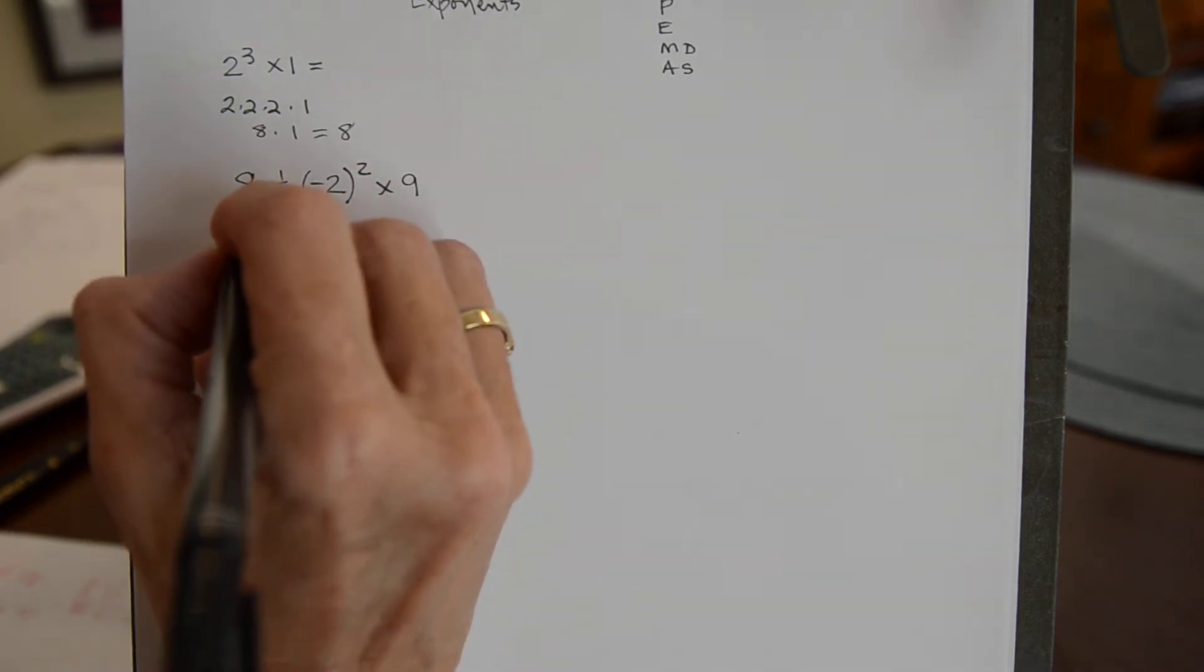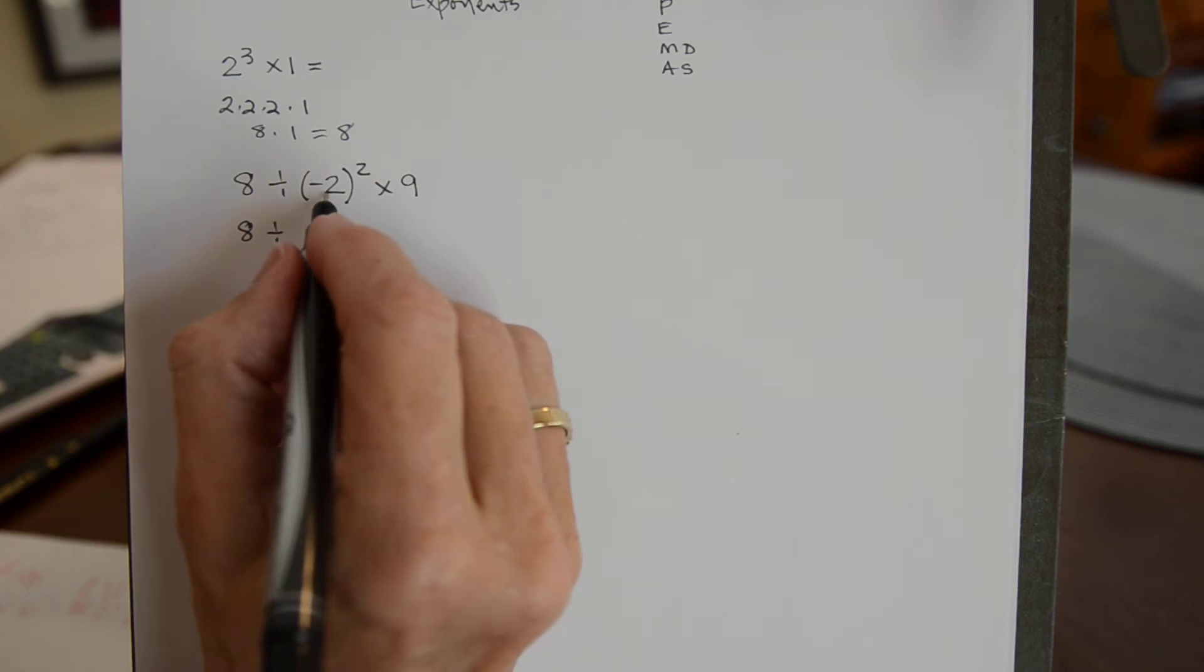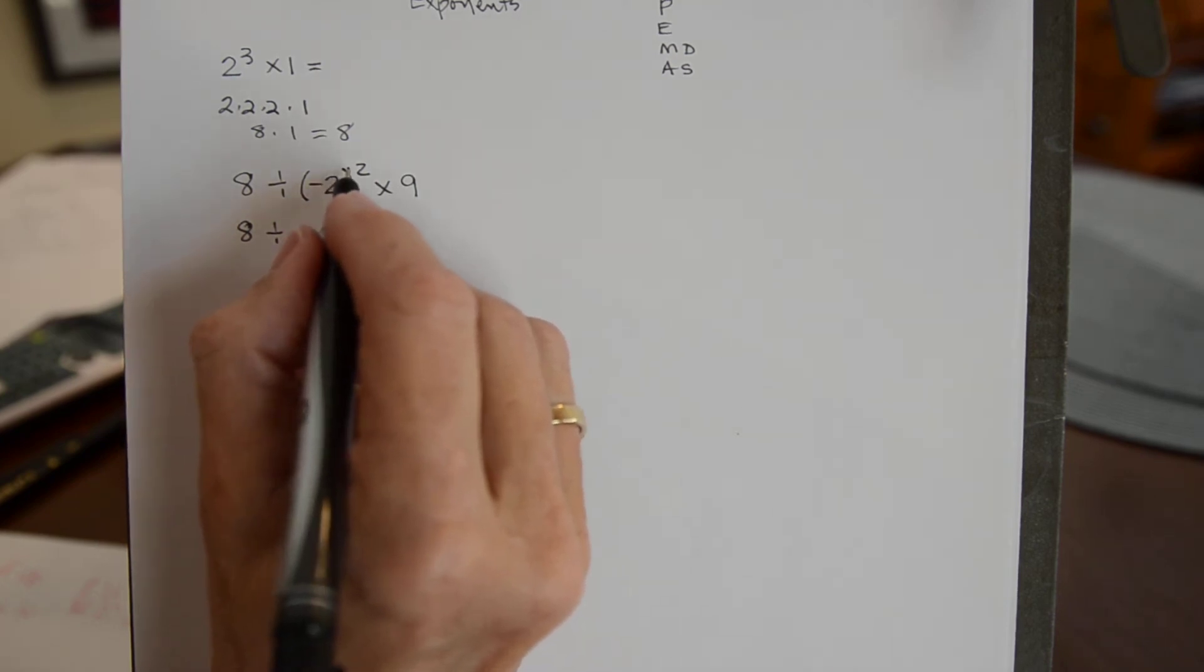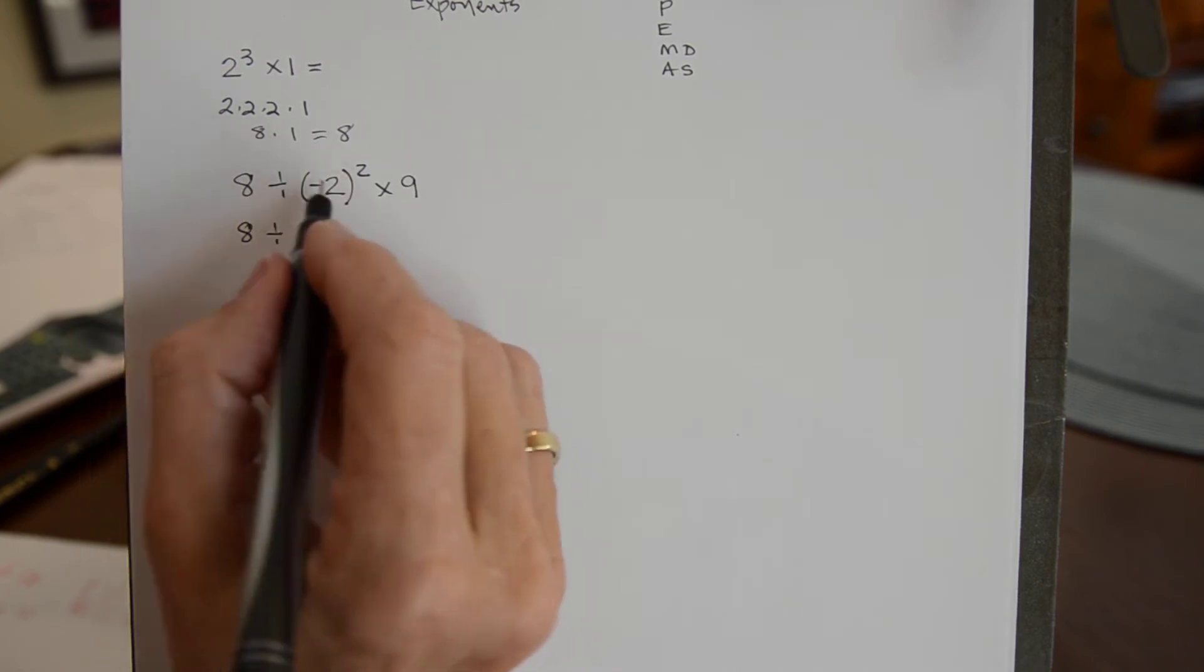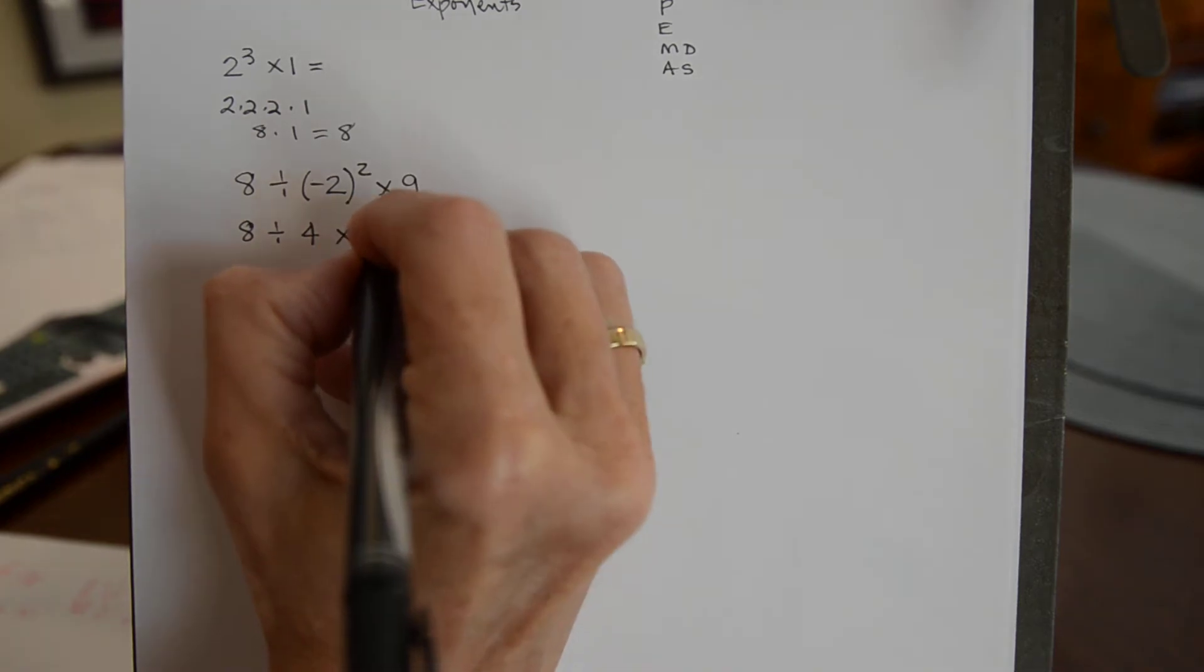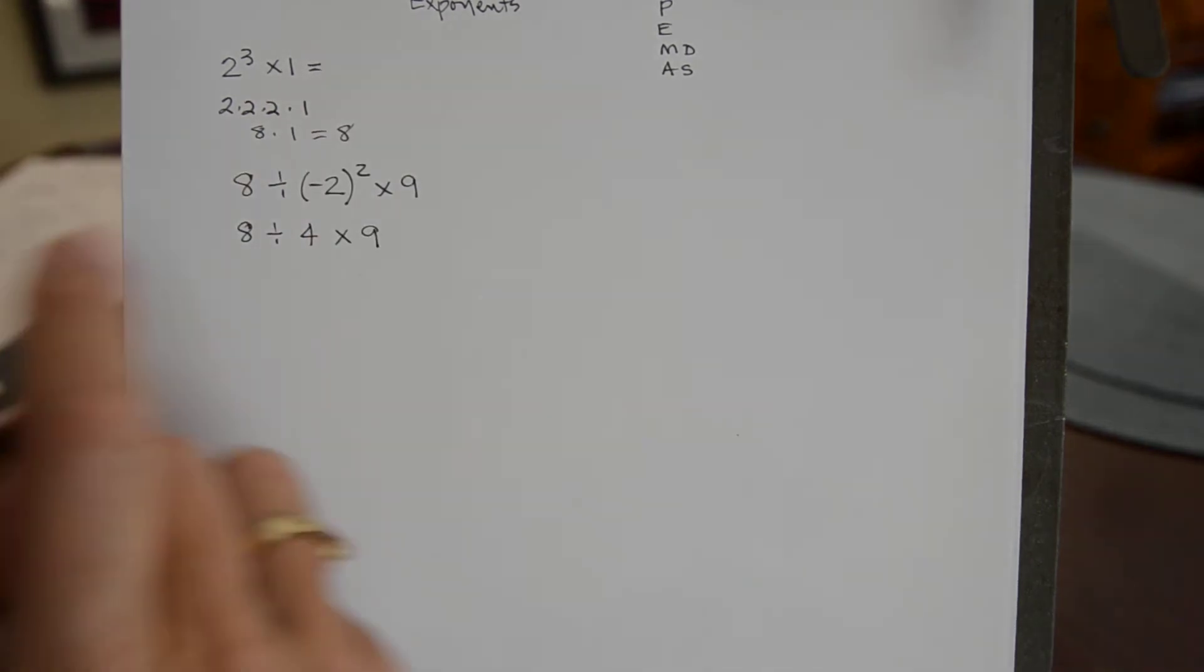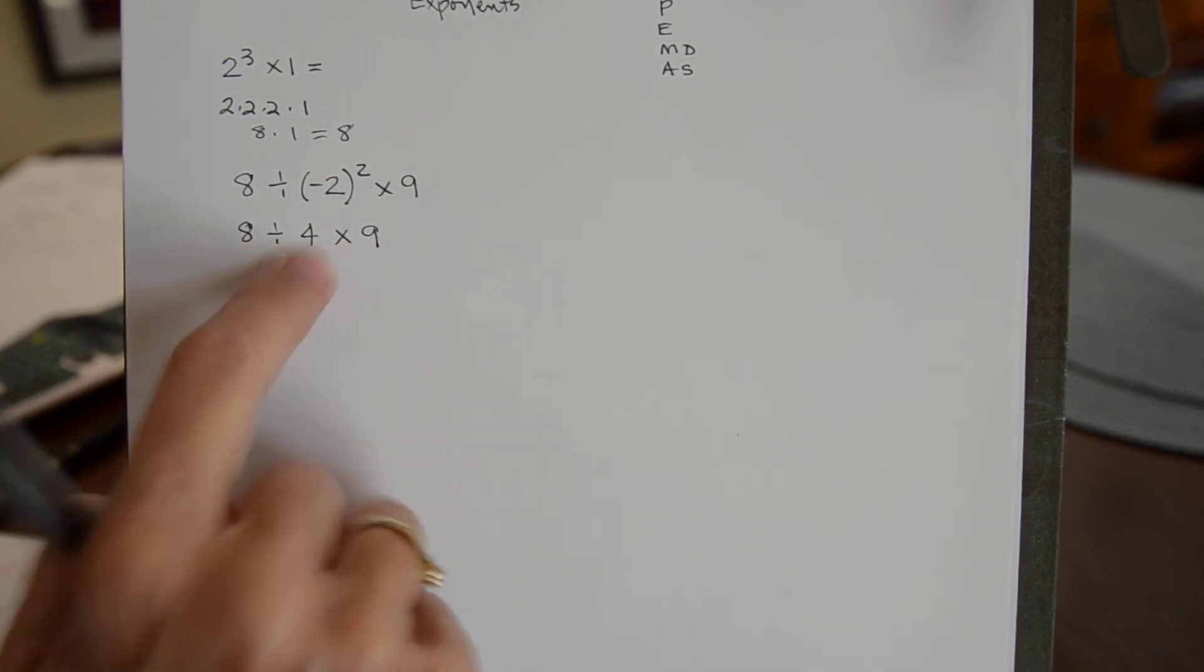So I will write the problem down again and I have 8 divided by, so this is negative 2 times negative 2. That's what the square is telling me to do or this exponent 2. So negative 2 times negative 2 gives me a positive 4 and then times 9. Now do not do this multiplication before you do this division. This is what we must do first.